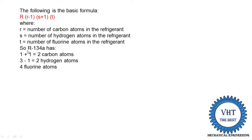For R134a, we have 2 carbon atoms (r=2, so 2-1=1), then for hydrogen we have 3 atoms (s=2, so 2+1=3), and the last digit 4 indicates 4 fluorine atoms. So there are 2 carbon atoms, 2 hydrogen atoms, and 4 fluorine atoms.